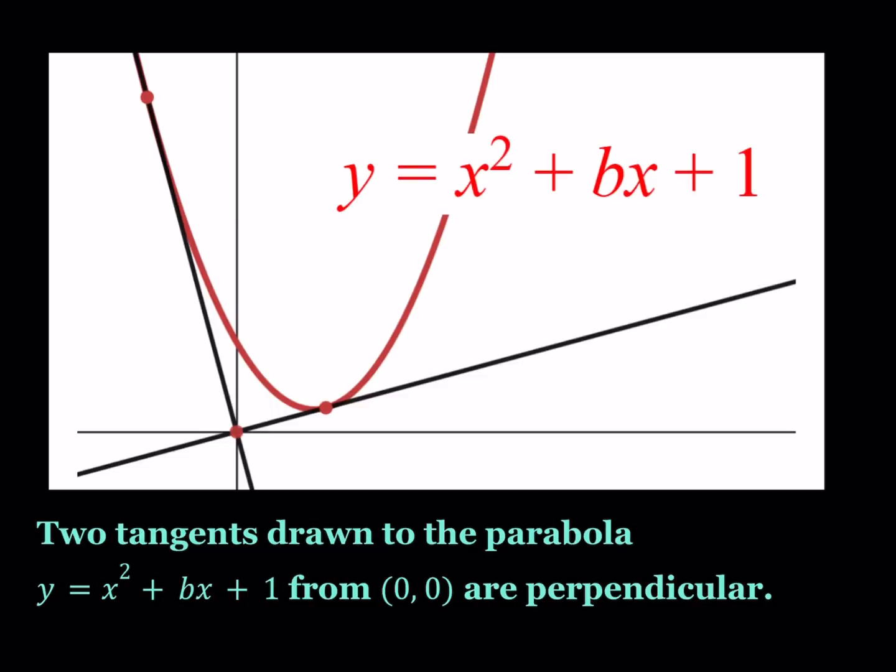Hello everyone. In this video we're going to be working with a parabola with two tangents. Two tangents drawn to the parabola y equals x squared plus bx plus 1 from the origin are perpendicular. And then using this information we're going to find the b value and also the equation for the tangents.